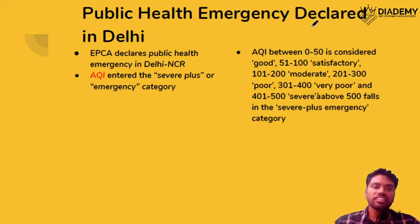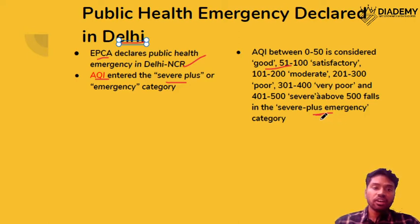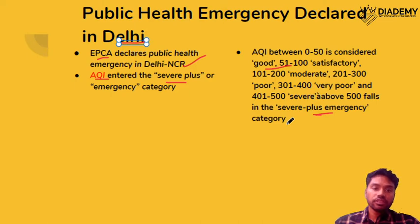The next issue is the public health emergency declared in Delhi. The Environment Pollution Control Authority (EPCA) has declared this because the Air Quality Index reached the severe-plus category. We have categories ranging from good, satisfactory, moderate, very poor, to emergency situations. This is important in the context of mains questions on pollution. At a phased level, we can start with measures like the odd-even scheme, then move to shutting down polluting plants, and further steps depending on the intensity of pollution.